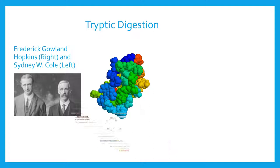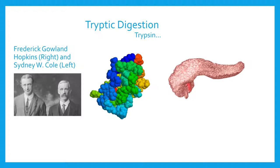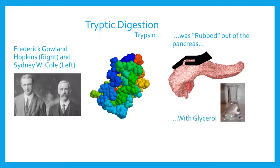Trypsin itself was named after its method of discovery, when it was rubbed out of the pancreas using glycerin. The root 'tryp' comes from the Greek word 'trebion', meaning to rub.